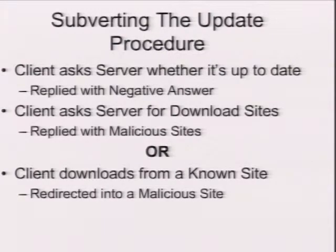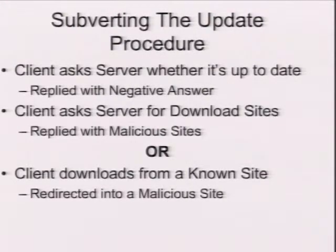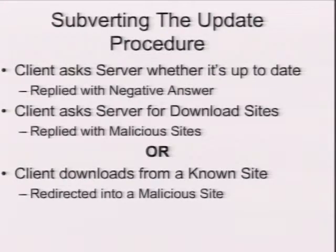The second requirement is to know the dialect between the update agent and the update server. This is very specific information gathered per application. The first dialect is composed from two interactions: the application goes online checking whether it's currently up-to-date. If not, it expects the server to supply a roadmap of versions and URLs to download them from. There are two failing points: we can always reply with a negative answer, and we can manipulate the URL to point to our own server.